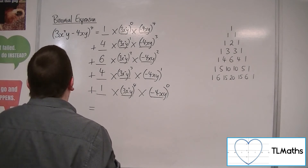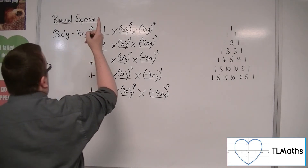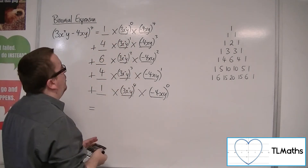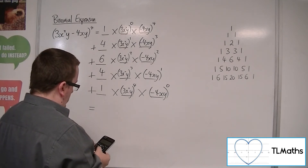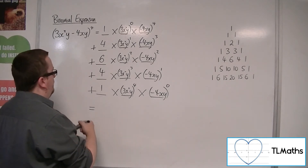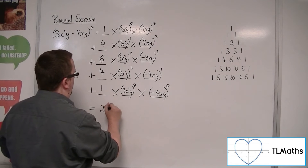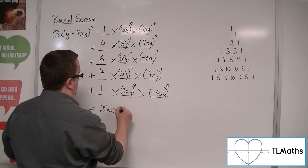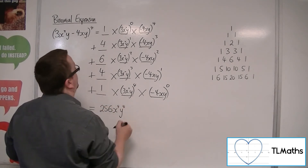We've got 1 times 1 times minus 4xy to the power of 4. So, 4 to the power of 4 is 256. That gives us 256x to the 4, y to the 4.